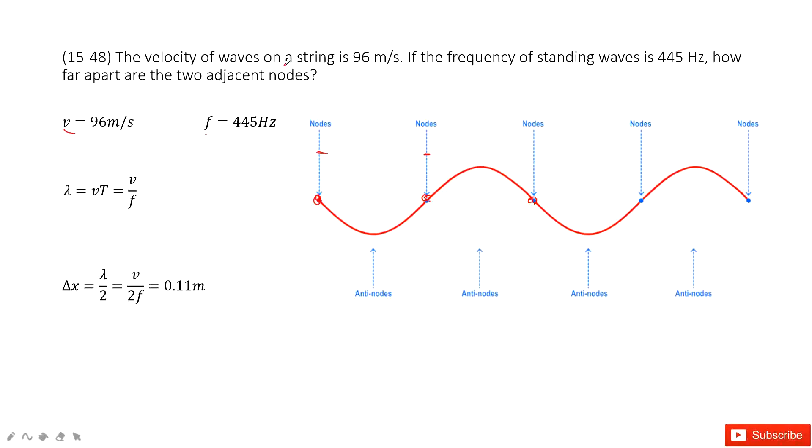So first we need to find the wavelength. Wavelength is the velocity times the period. Because the wavelength is from there to there, the time taken is just one period. So we use velocity times the period.